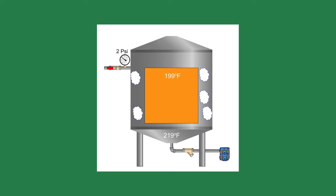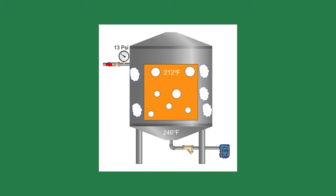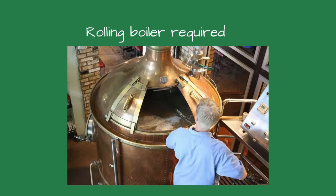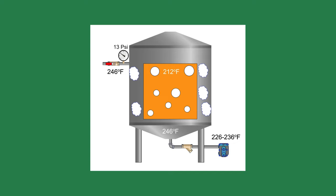It could eventually cause the water to boil, but it will take a long time. Conversely, steam at 13 psi is 246 degrees, or about 34 degrees higher than what we need. It will heat the wort much quicker and get it boiling much faster. The condensate temperatures of the steam system range between 10 and 20 degrees lower than the steam temperature. If the steam pressure is 13 psi, the condensate temperature will be between 226 and 236 degrees Fahrenheit.